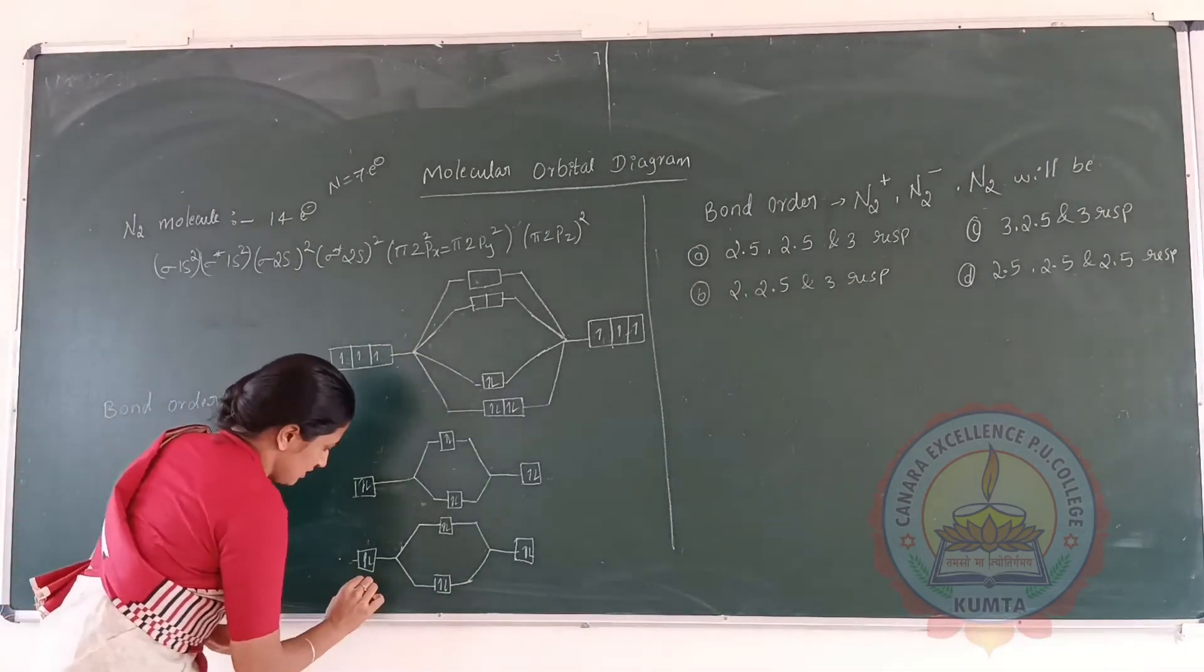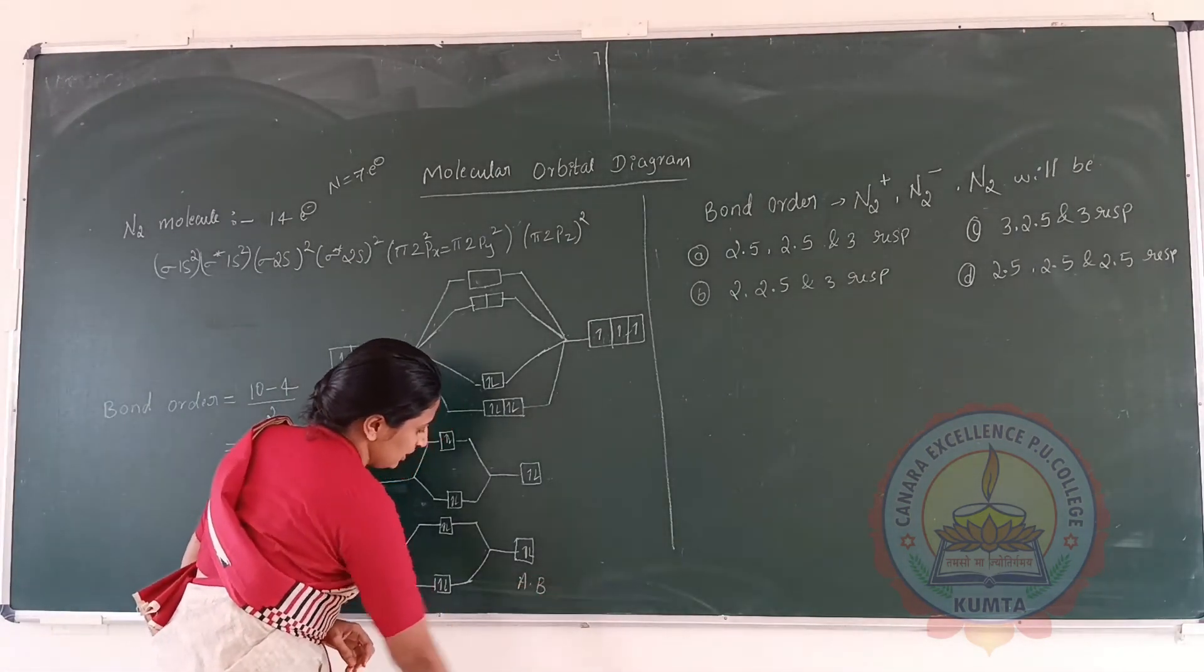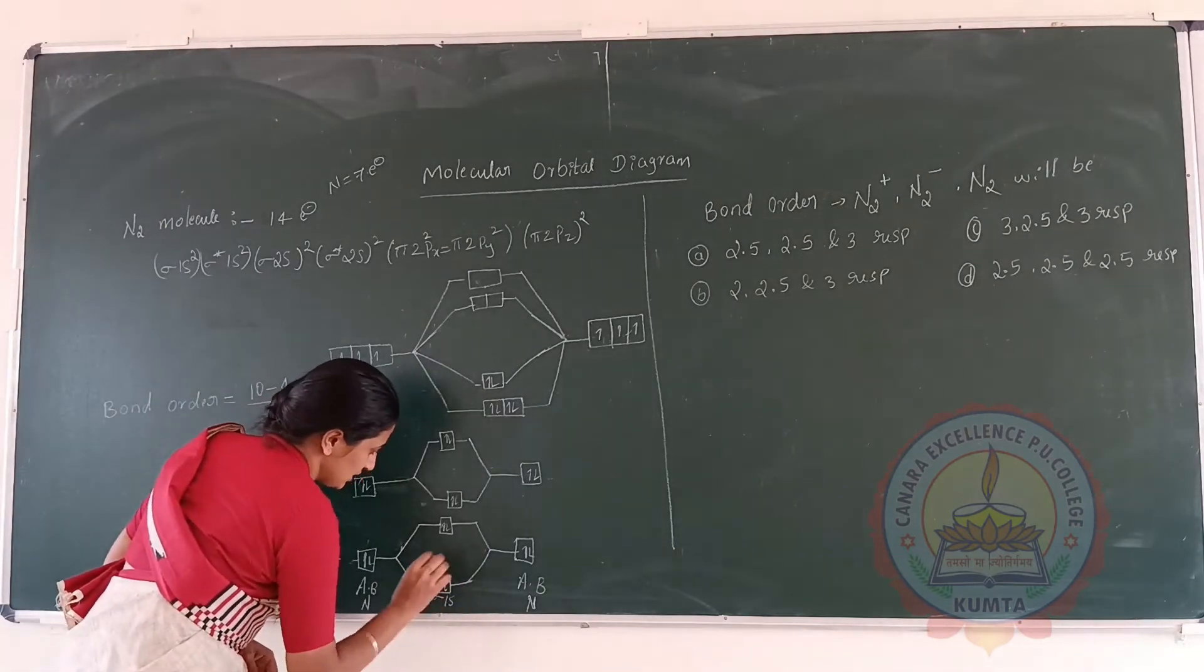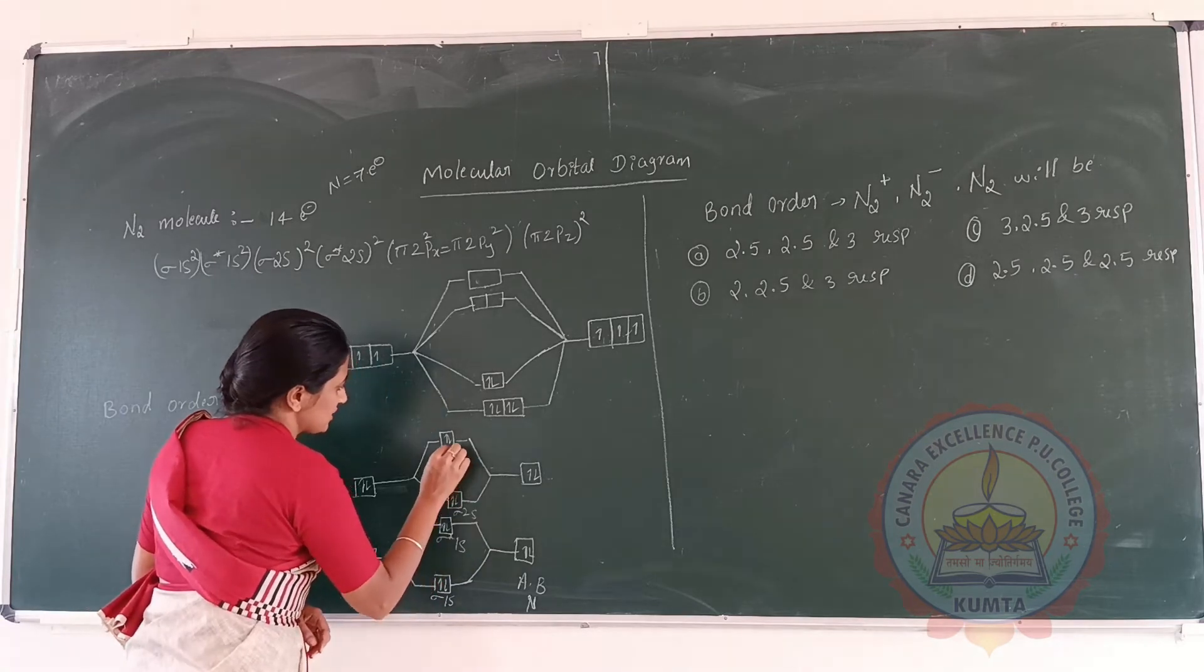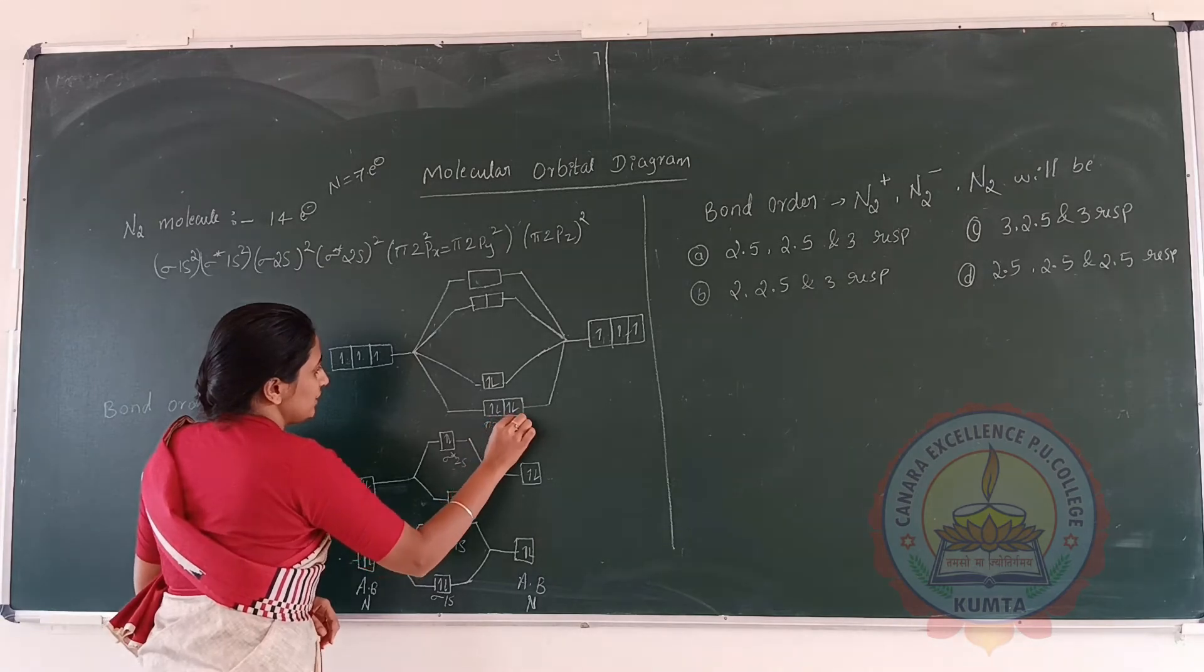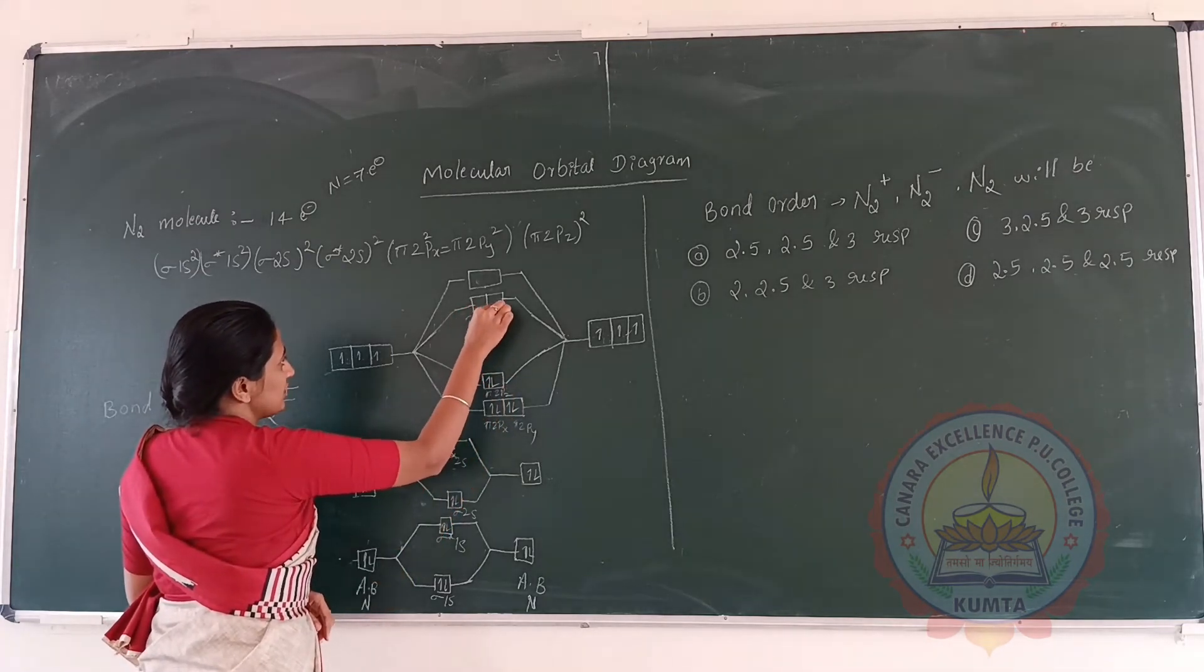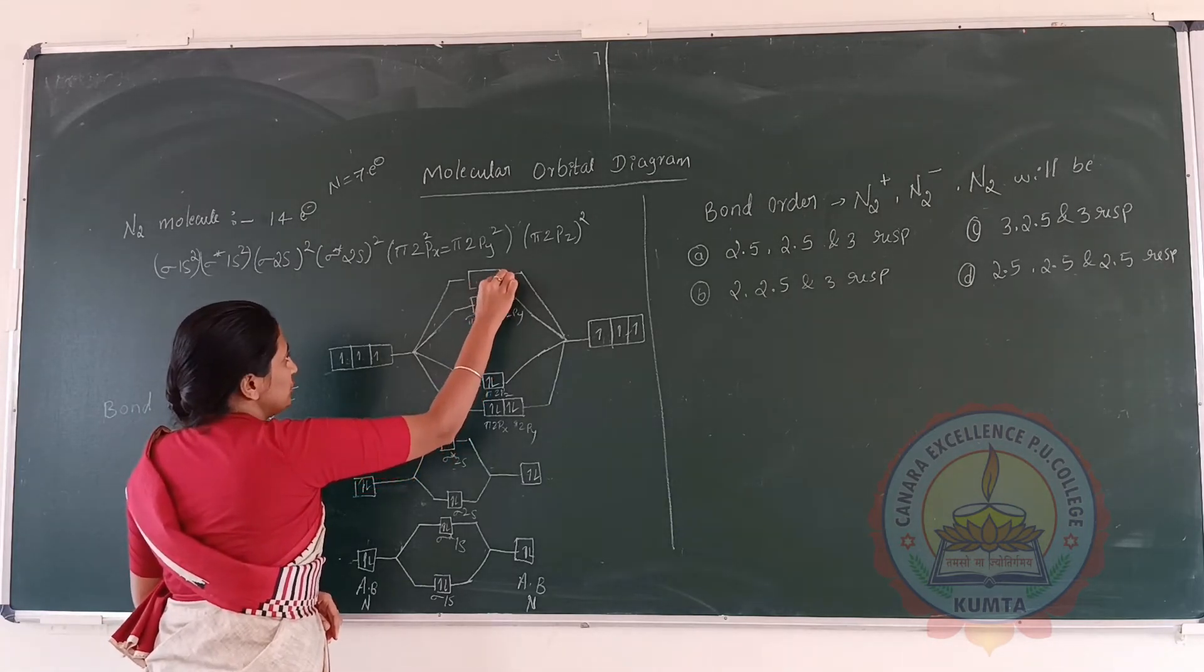This is the bonding molecular orbital, this is anti-bonding molecular orbital. The molecular orbital diagram for nitrogen molecule: this is sigma 1s, sigma star 1s, sigma 2s, sigma star 2s, pi 2Px, pi 2Py, sigma 2Pz, then pi star 2Px, pi star 2Py, and pi star 2Pz.